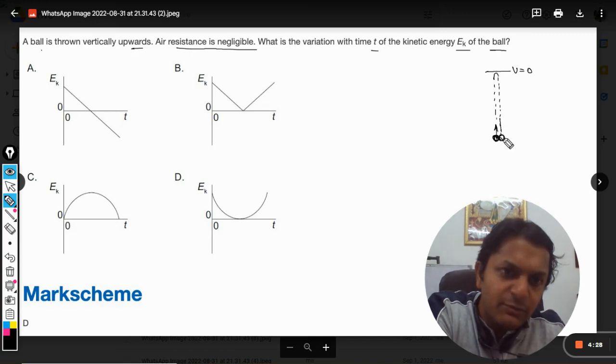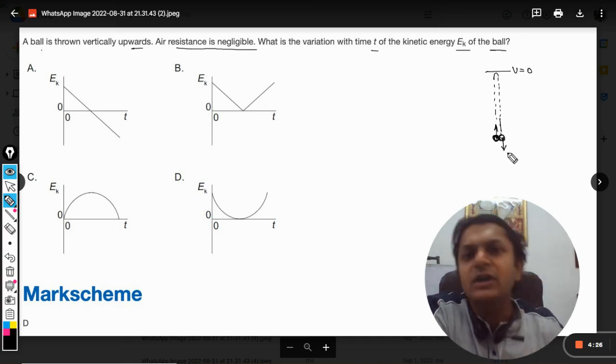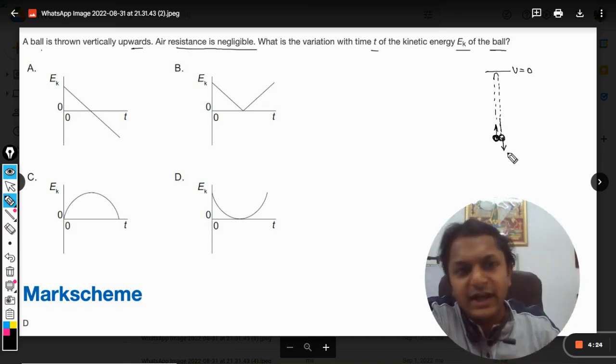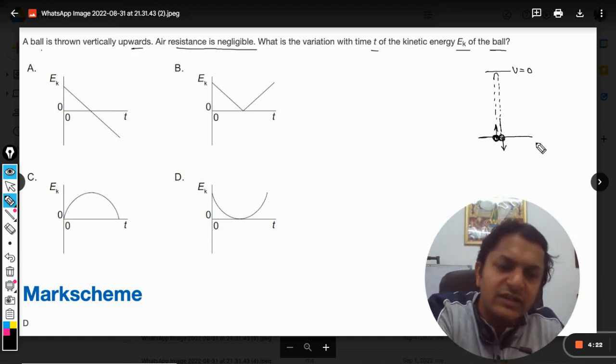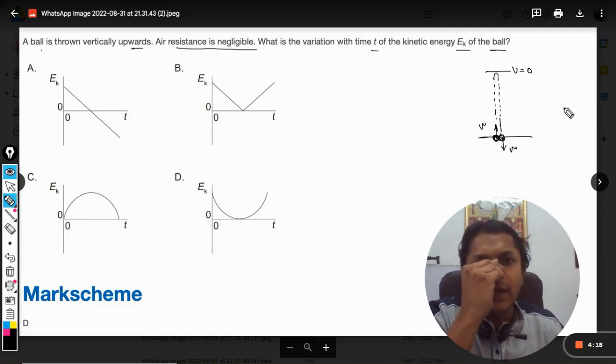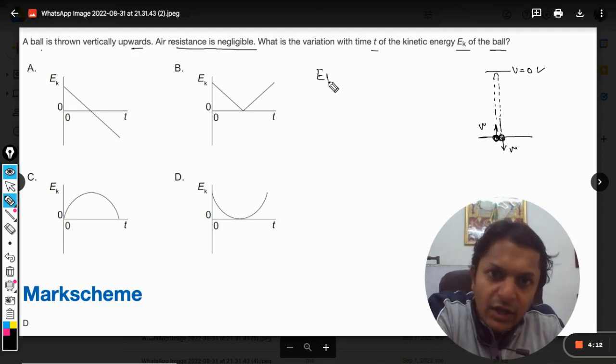When it reaches the same location it will be having the same speed but in the opposite direction. So both of these velocities are the same, the only thing is it is upward and this is downwards. And this velocity here will be zero.